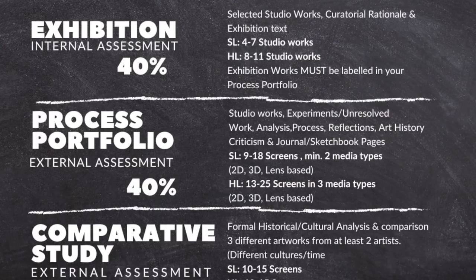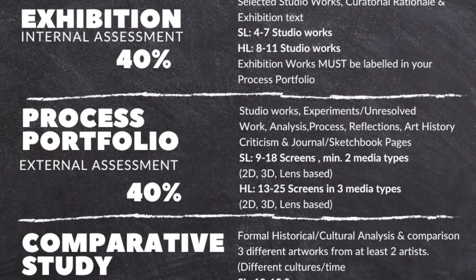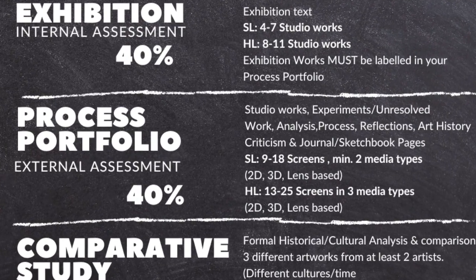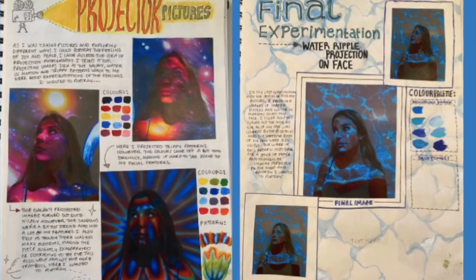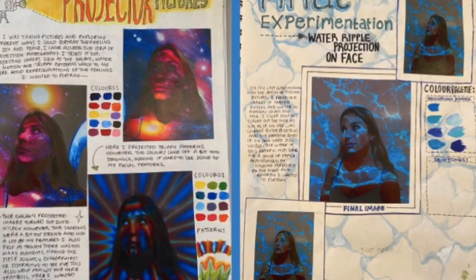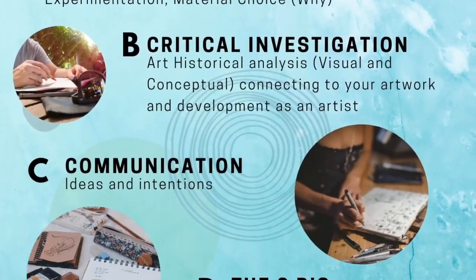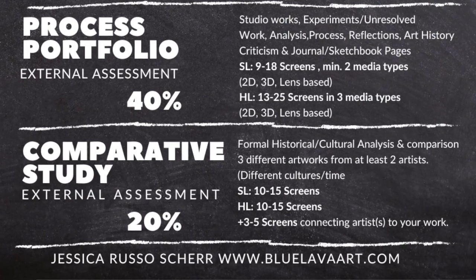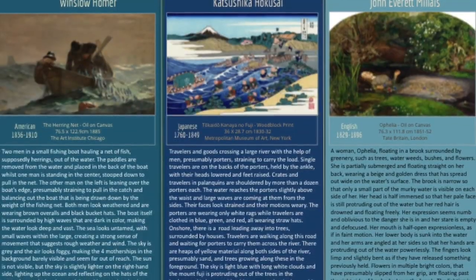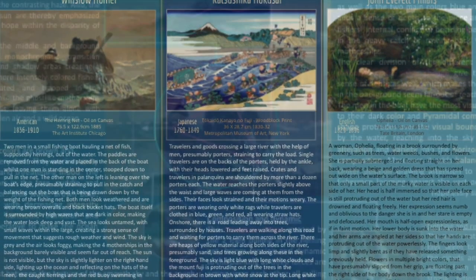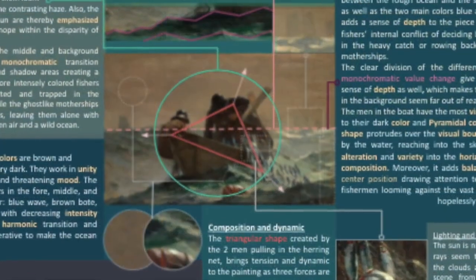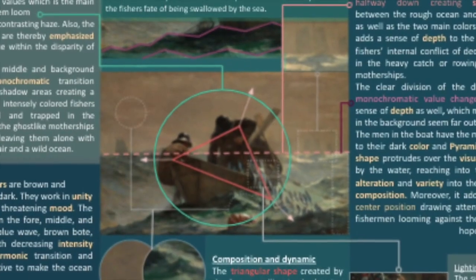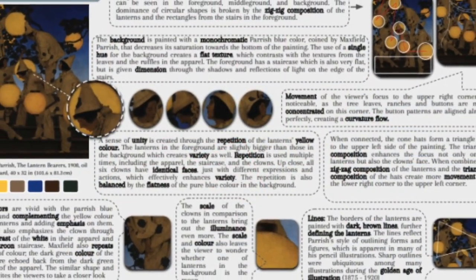The process portfolio is a digital form of the visual arts journal where students experiment, review, refine, and reflect on their work and their process. The comparative study is both visual images and written text where students have an opportunity to investigate and analyze artworks from three different cultural contexts.